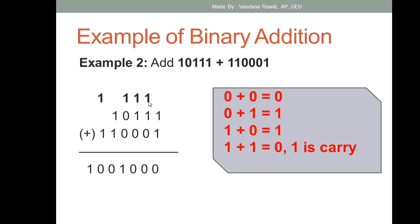One plus zero equals one by rule three, but in the carry part you have one, so one plus one is zero with one carry again. Then one plus zero is one, and adding the carry gives zero in the final answer, with one carry. Zero plus zero plus the carry one gives one. Then one plus one equals zero with carry one, and one plus one again gives zero with carry one, which is written in the final answer. So the answer is 1001110.